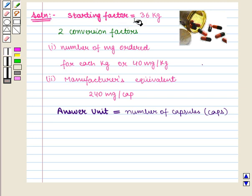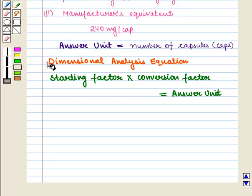So here we have the starting factor as 36 kg. There are two conversion factors: 40 mg per kg and 240 mg per capsule. The answer unit is number of capsules, or caps. Now we set up the dimensional analysis equation in this manner: starting factor times conversion factor equals answer unit.